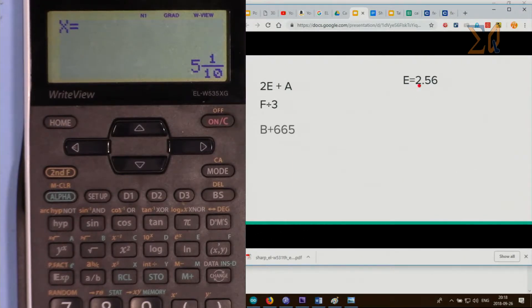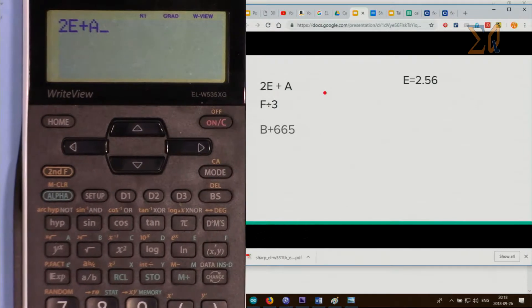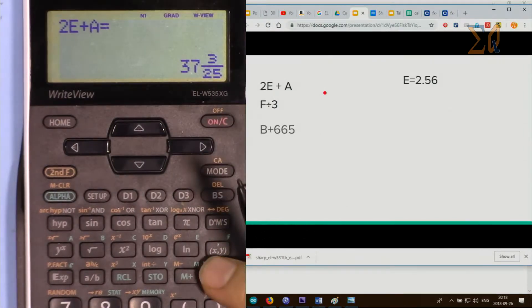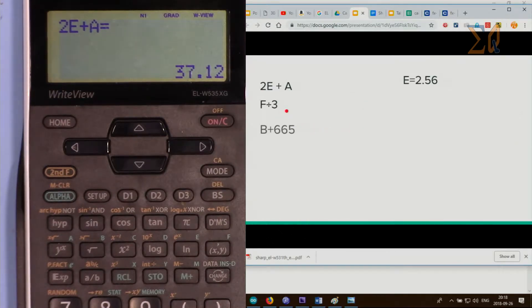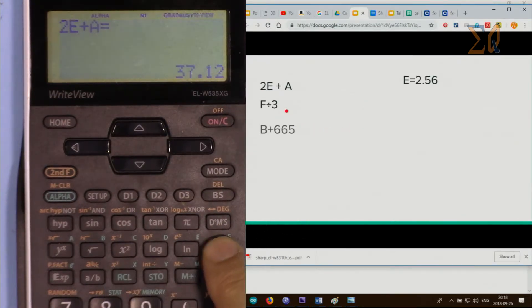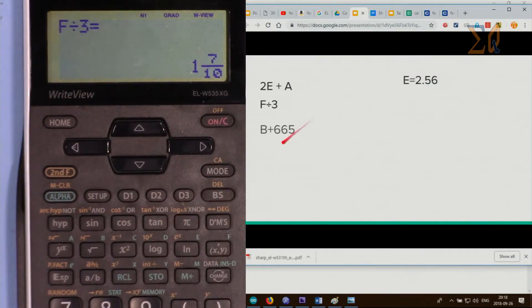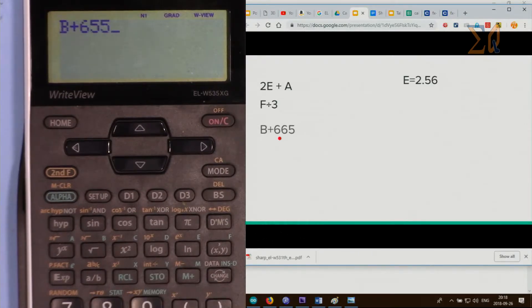Now let's say 2E plus A: recall E plus recall A, and that is the answer. If you want the decimal, press this button. F divided by 3: recall F divided by 3, and that's the value. Or B plus 655: recall B plus 655.